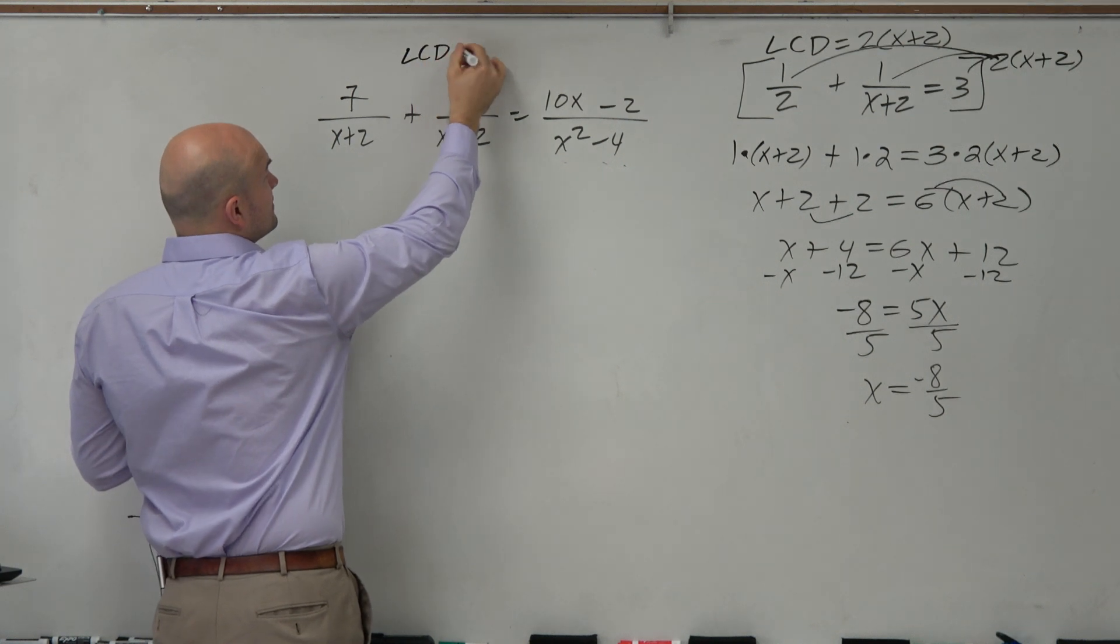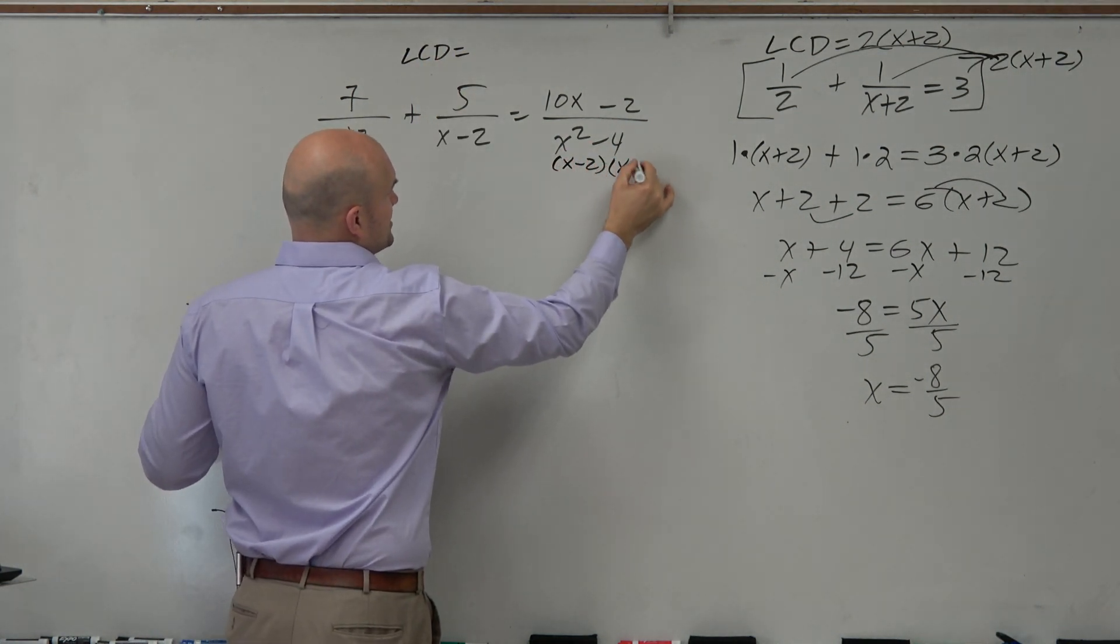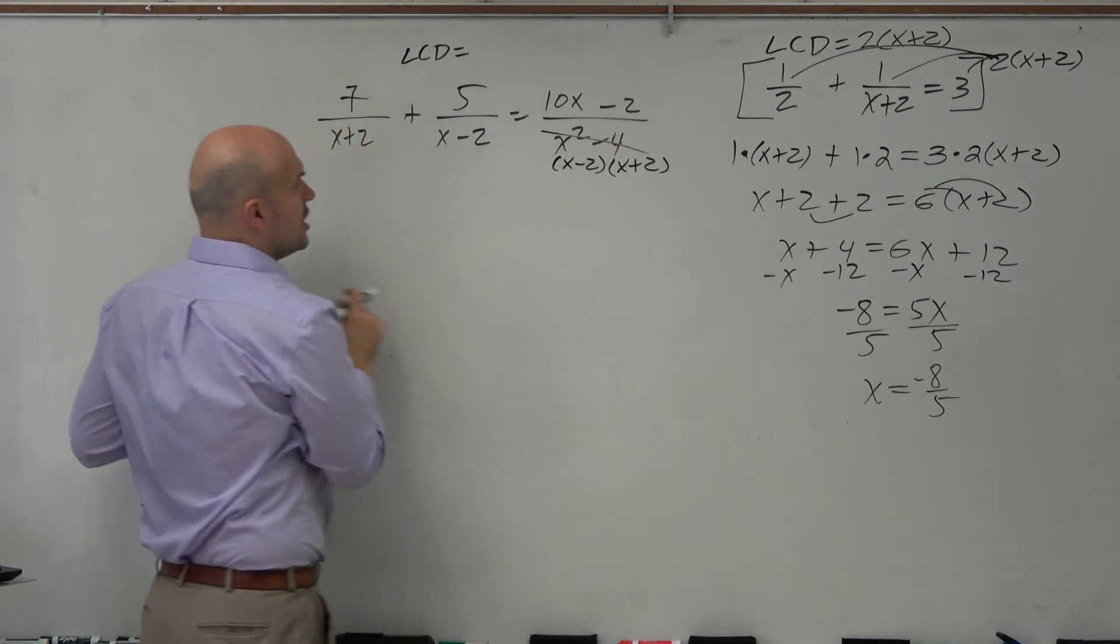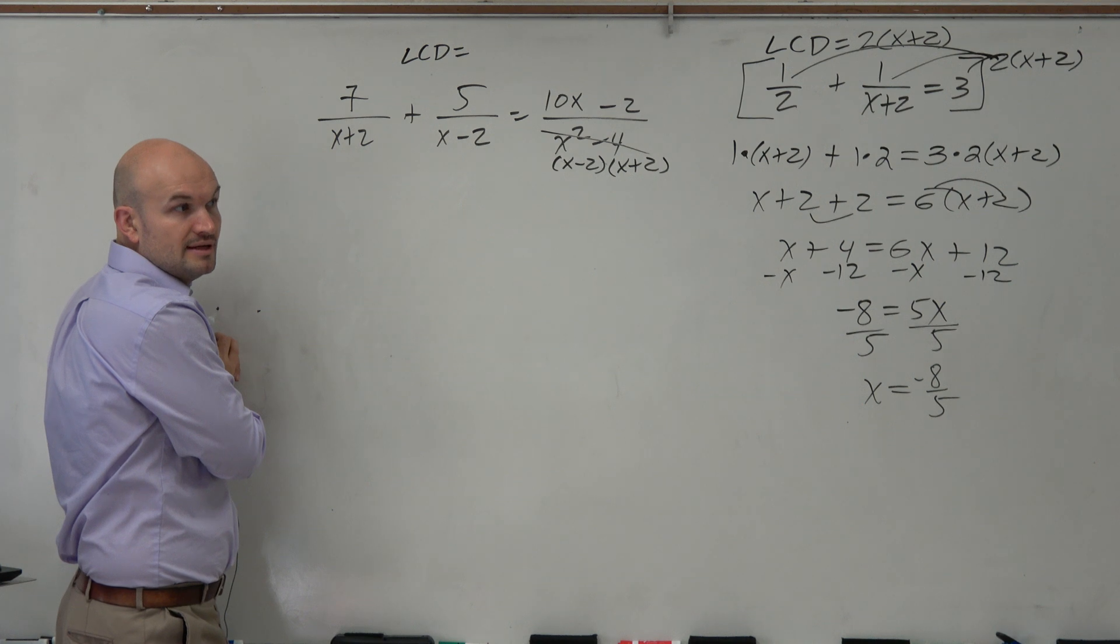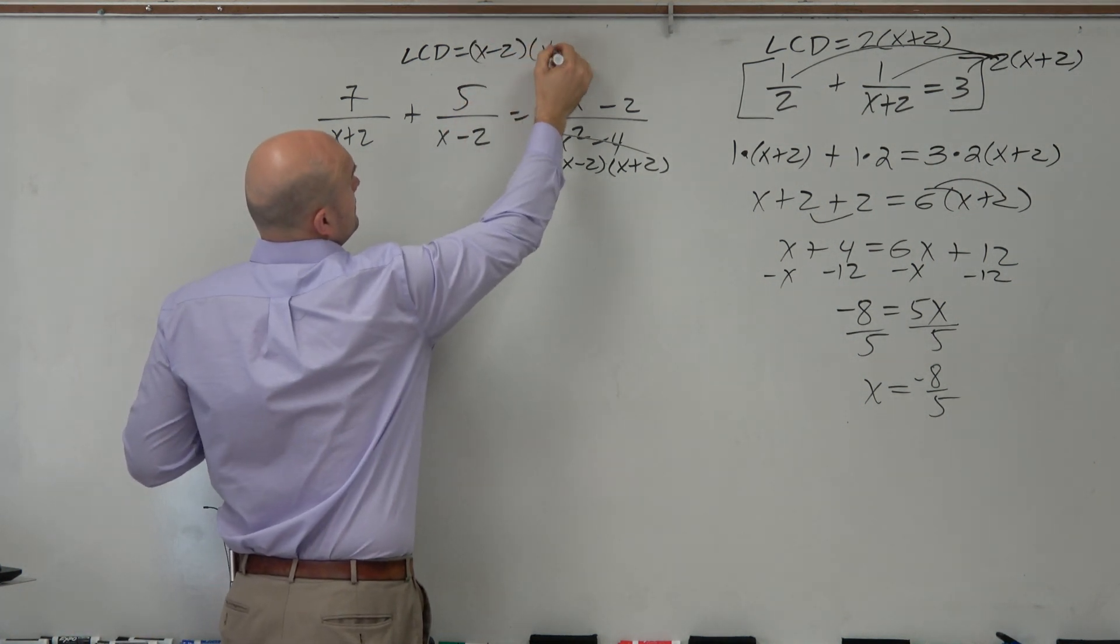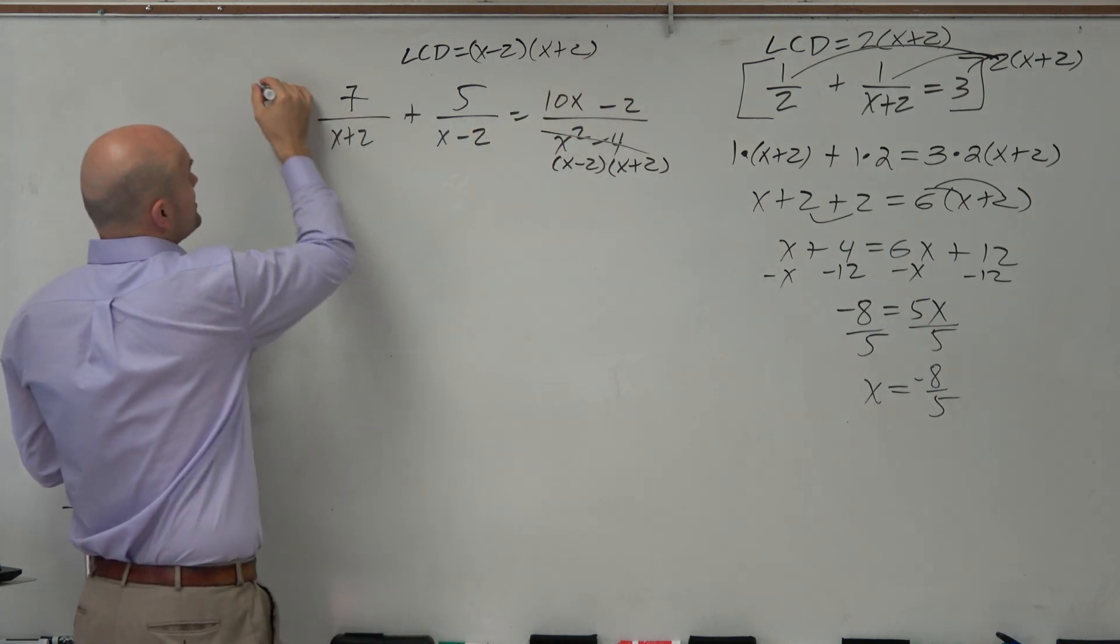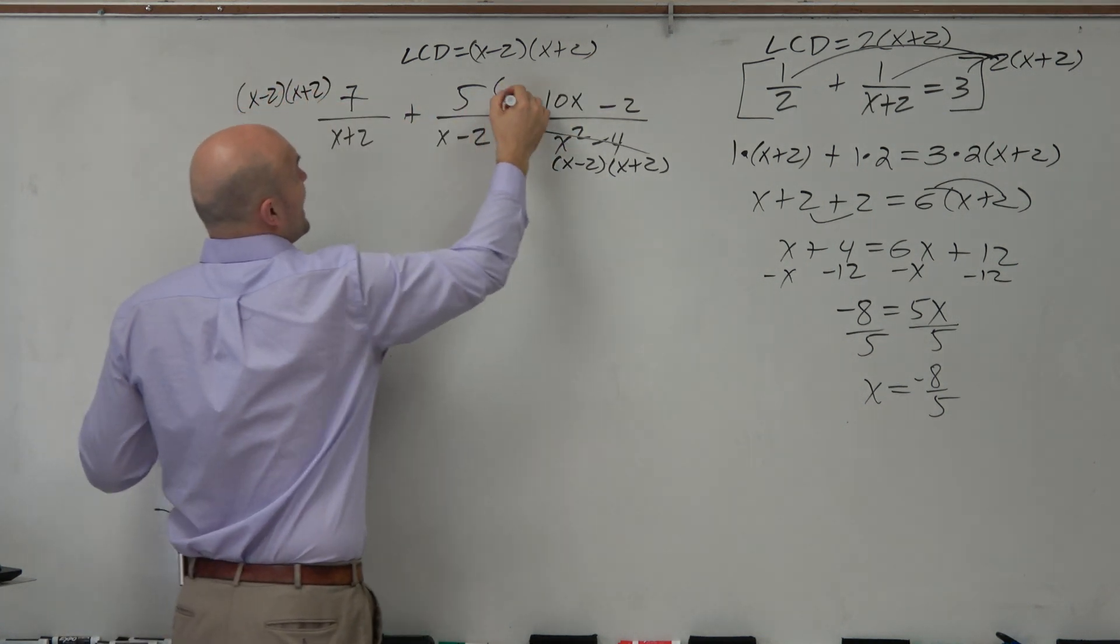So the LCD, I recognize this to be x minus 2 times x plus 2. So what do they have in common as far as an LCD goes? An x minus 2 and an x plus 2. So let's just multiply everything times x minus 2, x plus 2. Everything.